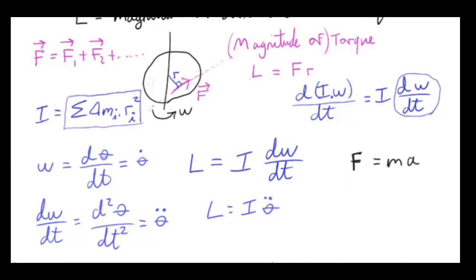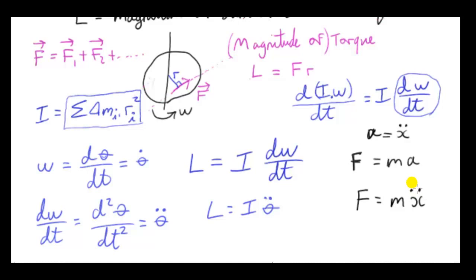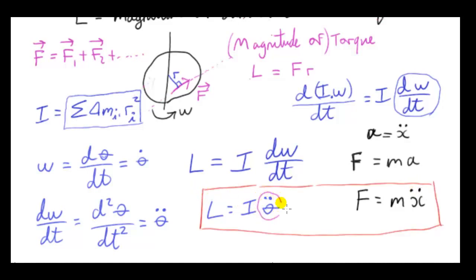Going back to Newton's second law: if x is the displacement of the particle, then a is just the second derivative of the displacement — x double dot. So velocity V equals x dot, and differentiating the speed with respect to time gives the acceleration, just as we differentiated the angle twice with respect to time to get d omega dt. So we have F equals M times x double dot. Theta double dot plays the role of x double dot, and I, the moment of inertia, plays the role of the mass in Newton's second law.